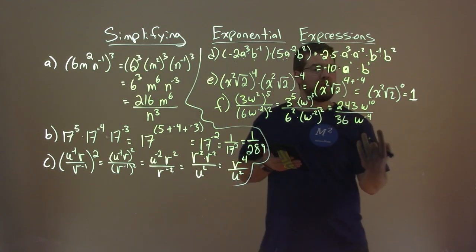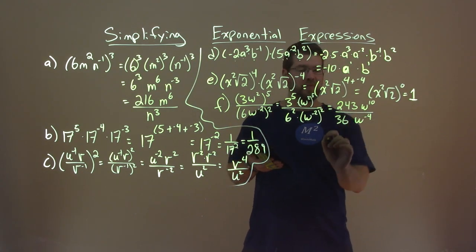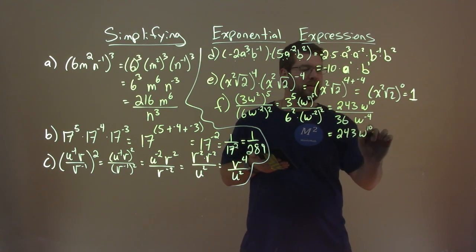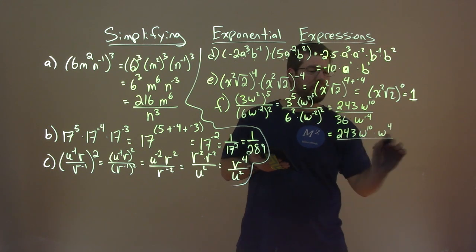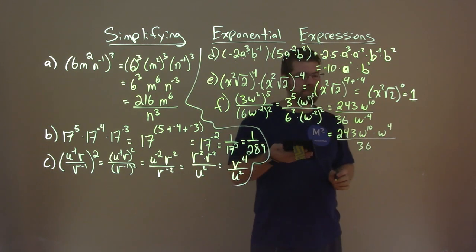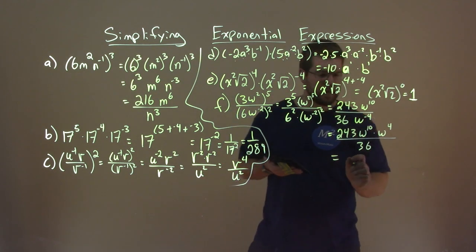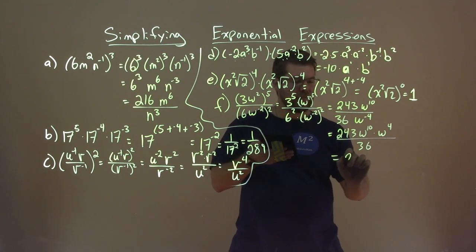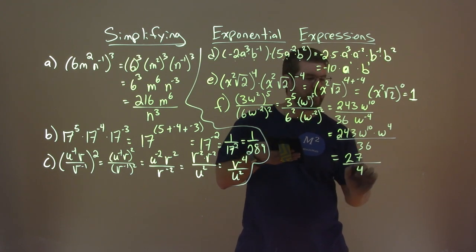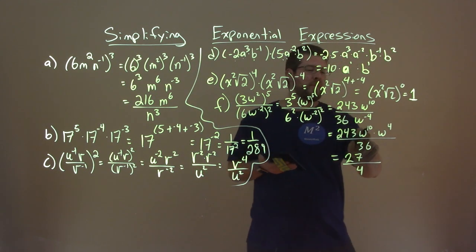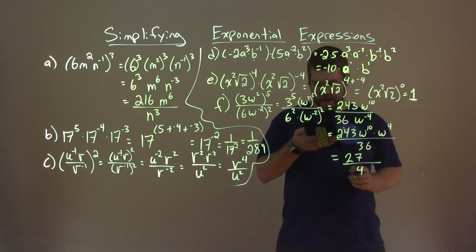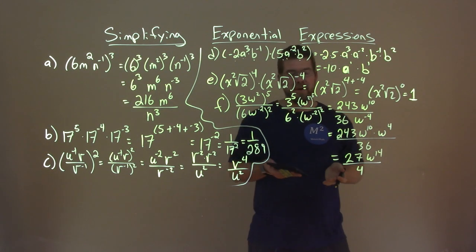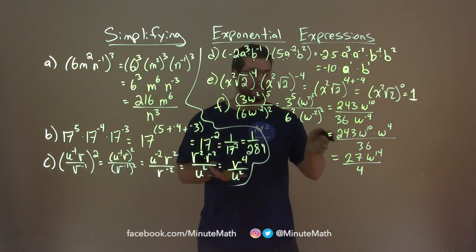We bring the w to the negative 4 from the denominator up to the numerator as a positive: 243 w to the tenth times w to the positive 4th over 36. Now simplify — 243 over 36 simplifies to 27 over 4. And 10 plus 4 is 14, so we have w to the 14th power. There's our answer: 27w to the 14th power over 4.